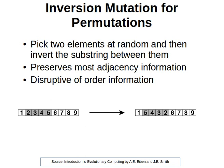Welcome back. The third mutation method for permutations is known as the inversion mutation. In this method, we randomly pick two elements and then we invert or reverse the substring or the values between them. We just randomly pick two points and then we reverse that subarray or sublist.